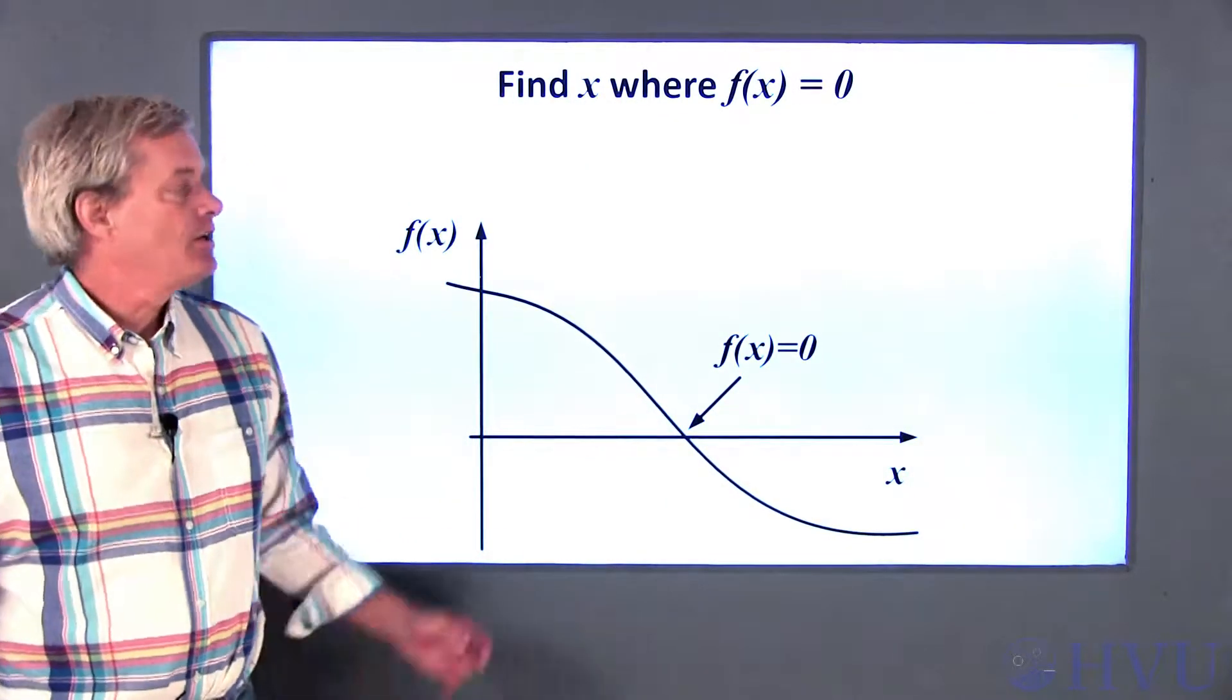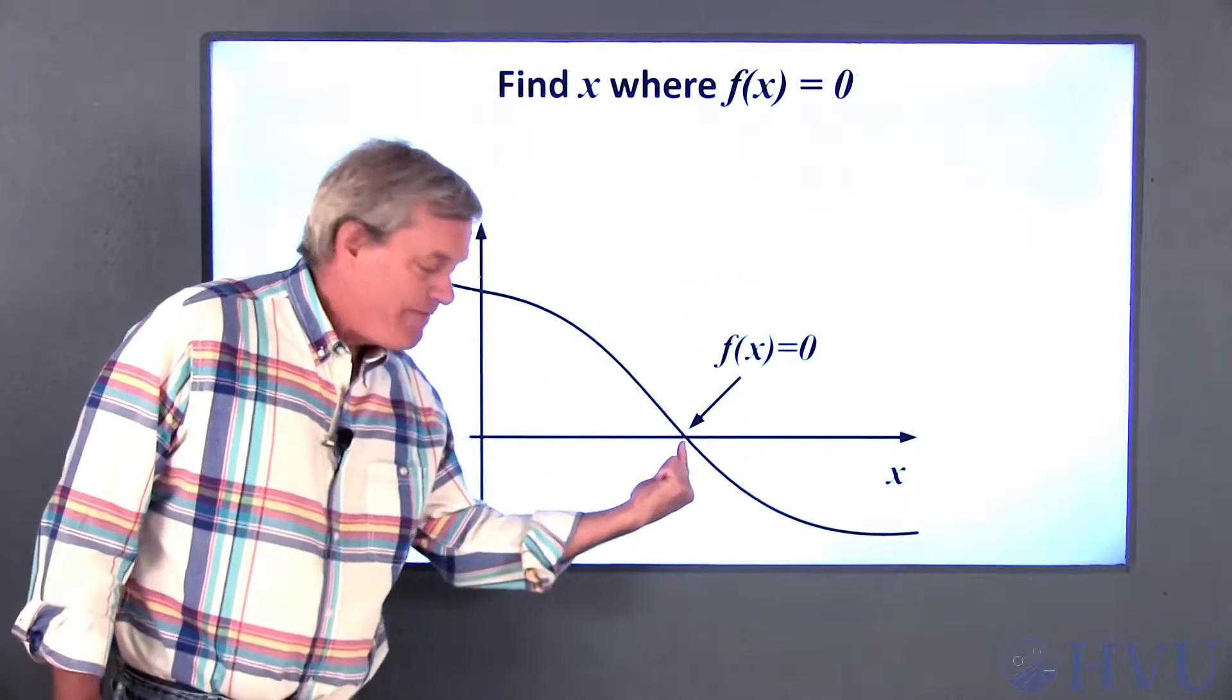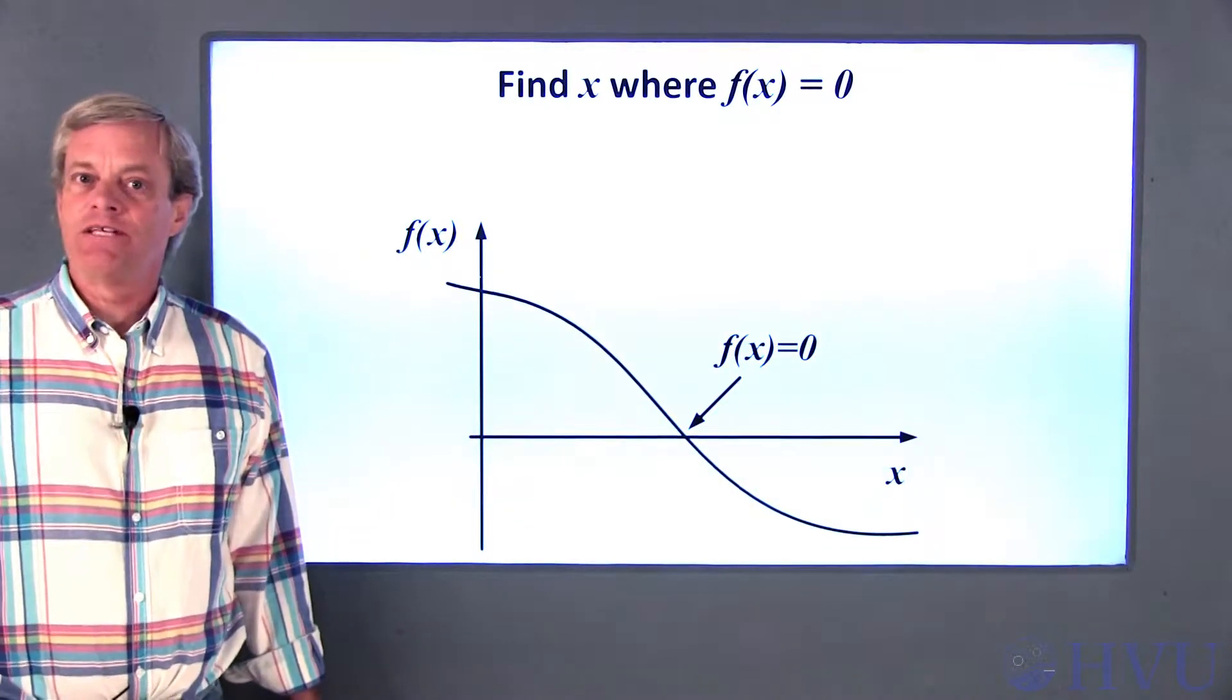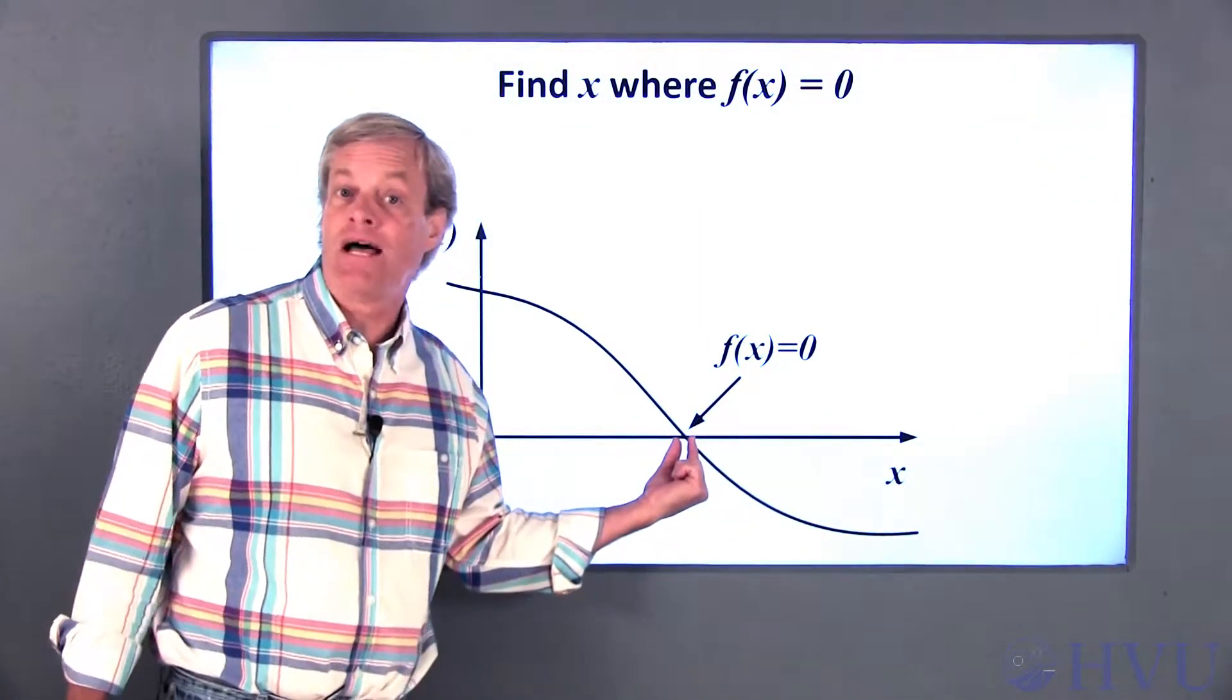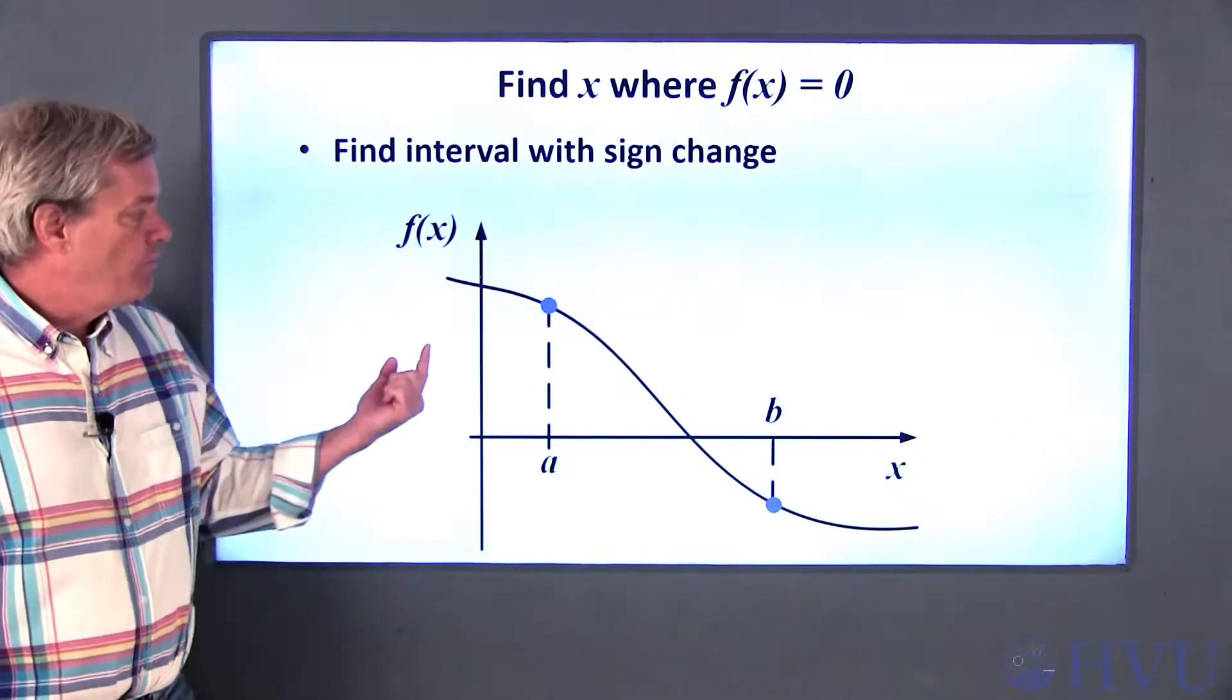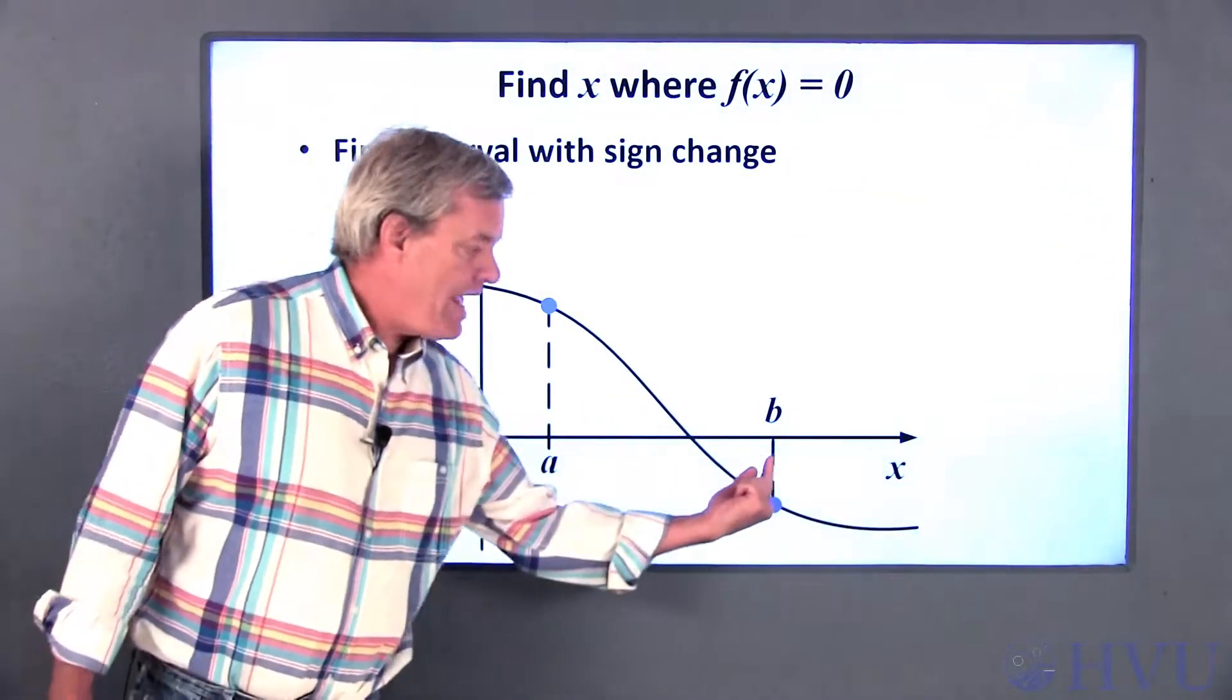My first example is solving an arbitrary function f of x equals 0. So we want to find this value of x. This problem can be difficult to solve exactly. The numerical analysis approach consists of finding the point where the sign on the function changes from positive to negative. We start with an interval within which the function changes sign. So the solution is somewhere between A and B.